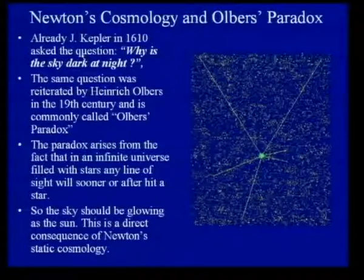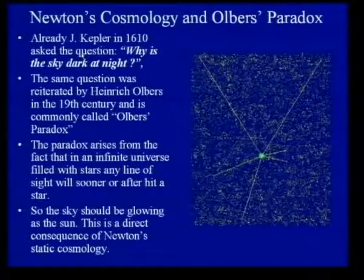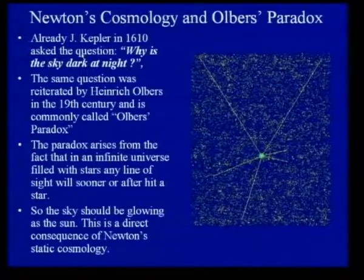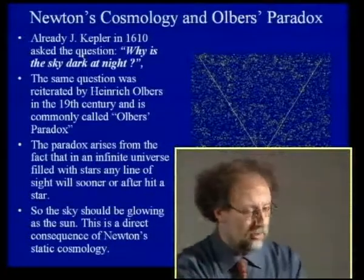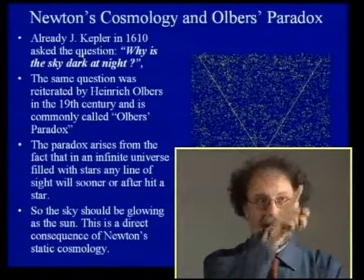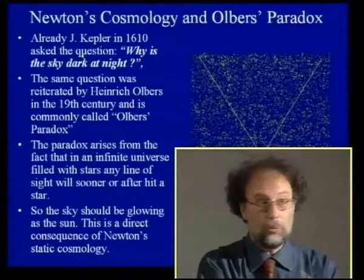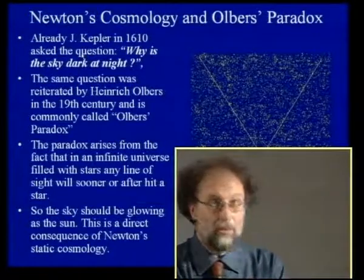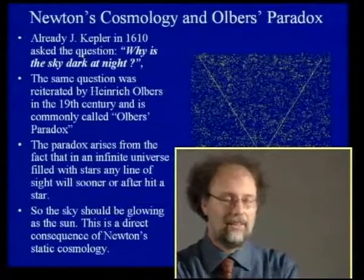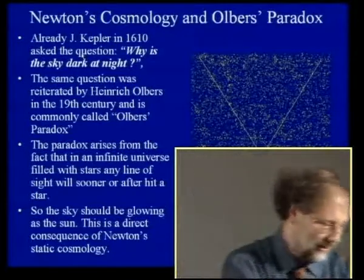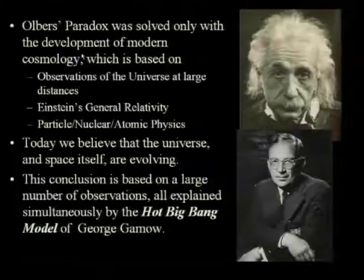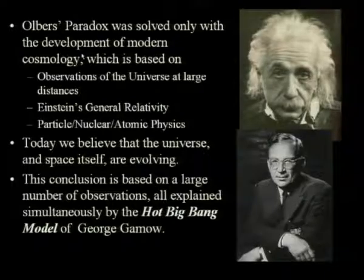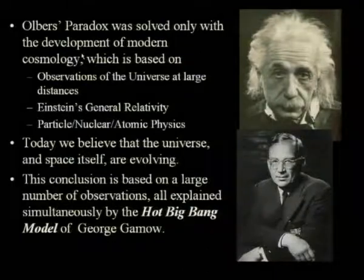The paradox arises from the fact that in an infinite universe, wherever you look, sooner or later your line of sight will hit a star and you will see light. You will see a uniform glowing sky, even at night. This is a paradox, and it took a lot of time to be solved.